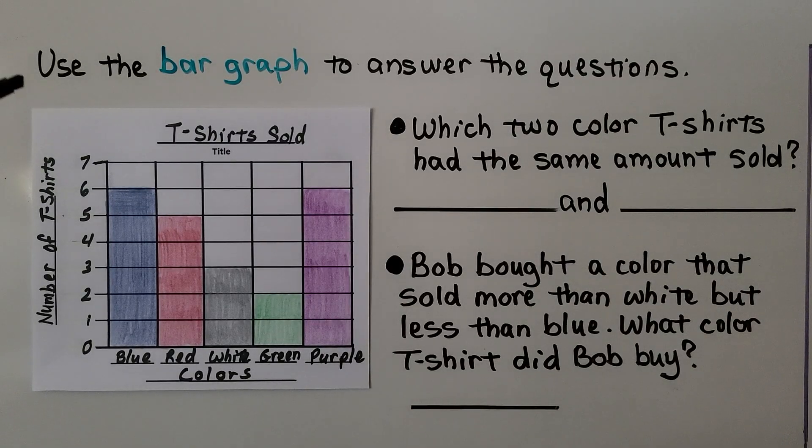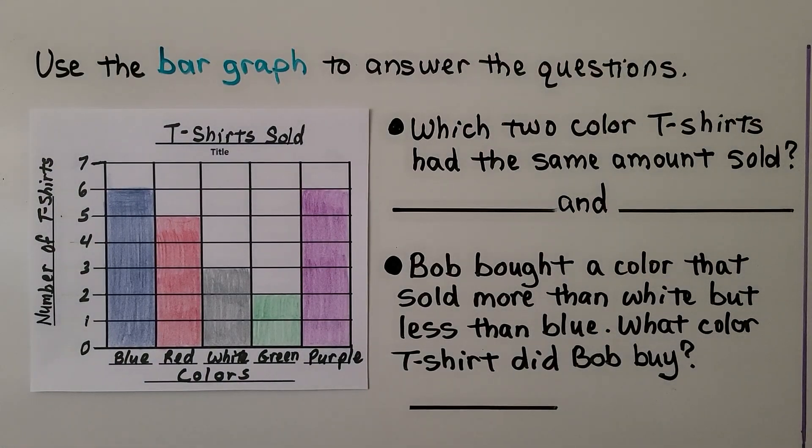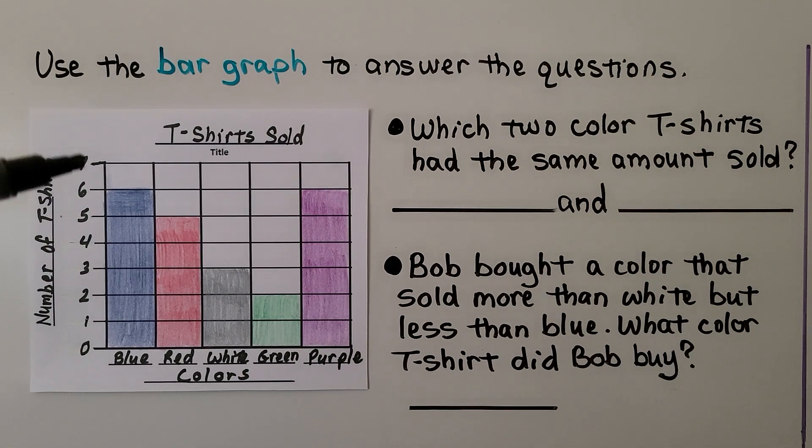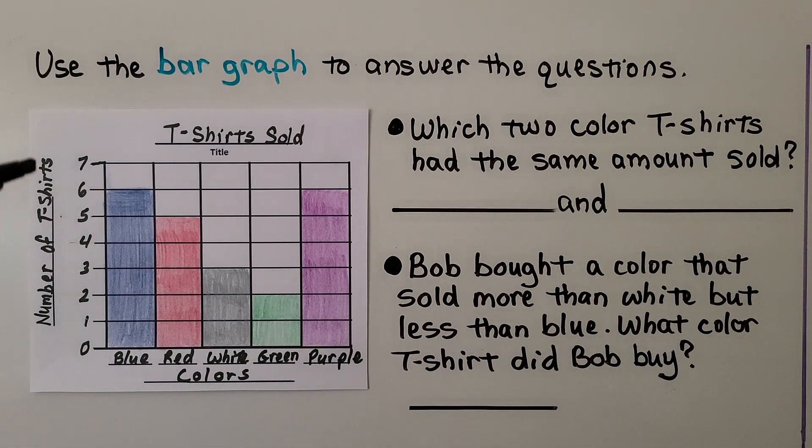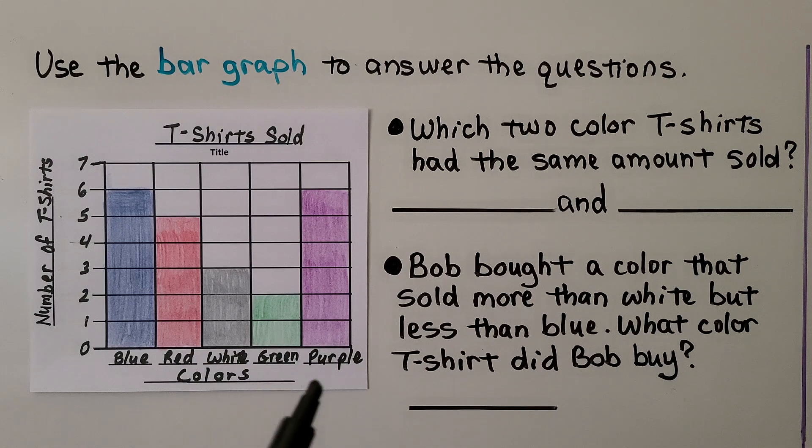Now this says use the bar graph to answer the questions. So let's look at this bar graph first. It says the title is t-shirts sold. Here's our scale with our numbers and it's the number of t-shirts that were sold. And we can see our choices are blue, red, white, green, and purple. These are the colors.